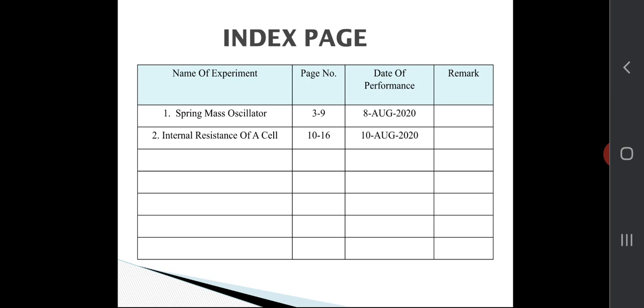I have given you some examples of how to write it: spring mass oscillator and the page number and also the date of performance, and the internal resistance of a cell. These are some examples I have given here. In this way, you have to write the index page. In the index page, you should not write the complete aim of that particular experiment, just write down the heading.